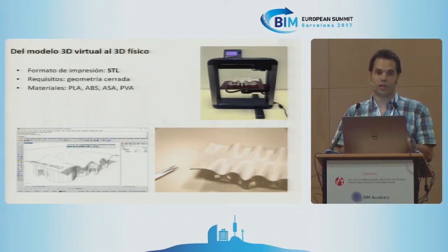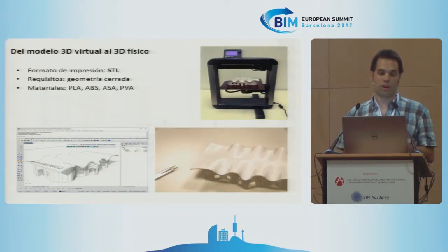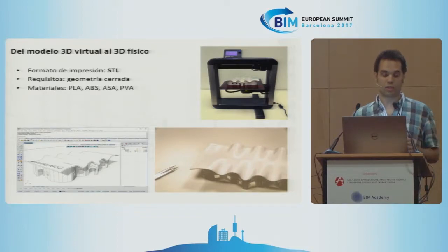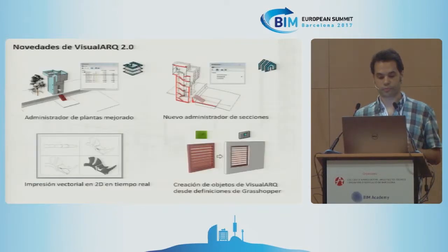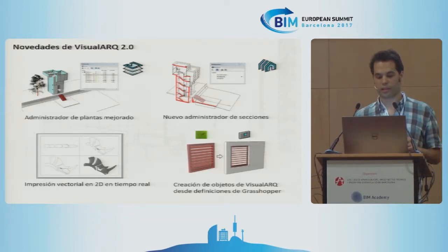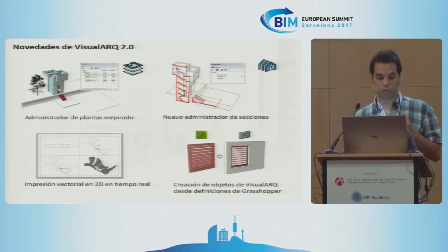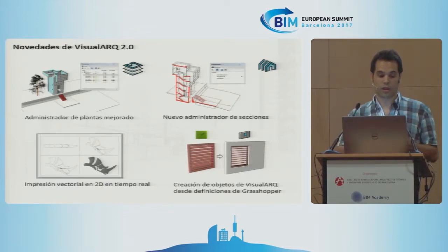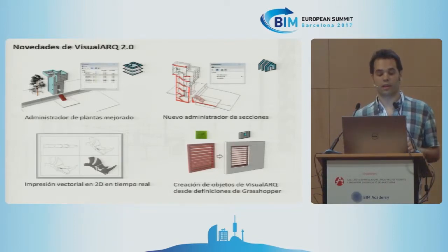Visual Arc objects can be converted, and with a Boolean union you can convert them through the STL format, which is the most practical, and bring it to the 3D printer. I would like to show you some of the novelties that we recently launched, because I believe them to be really handy, especially if you work with Rhino at different levels.